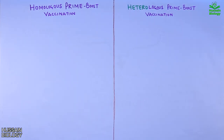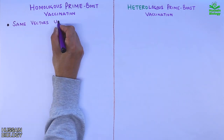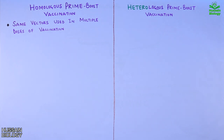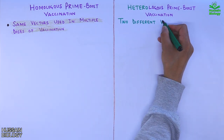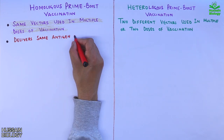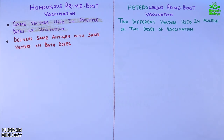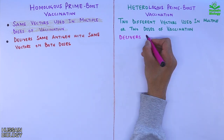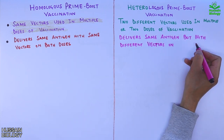As the name suggests, homologous means we use the same vectors in multiple or two doses of vaccination. For heterologous, we use two different vectors in multiple or two doses. Homologous prime-boost delivers the same antigen with the same vectors on both doses, whereas heterologous prime-boost delivers the same antigen but with different vectors on both doses.